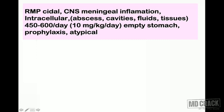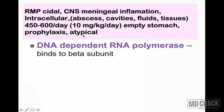The dose of rifampin for adults is 600 mg per day; if body weight is less, 450 mg per day; the standard dose is 10 mg/kg body weight. Rifampin is always given early in the morning on an empty stomach. It is useful for prophylaxis of tuberculosis and against atypical mycobacteria.